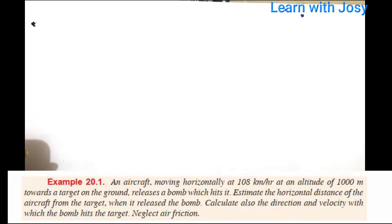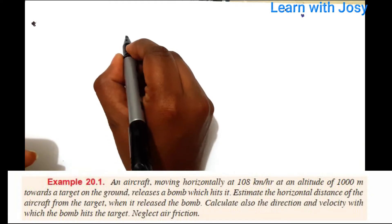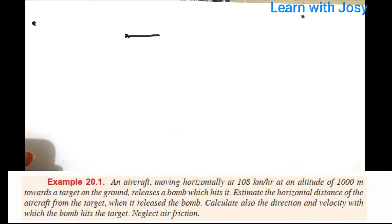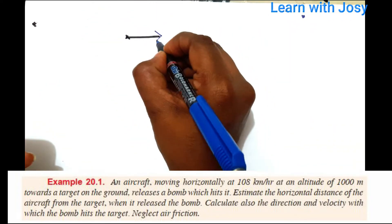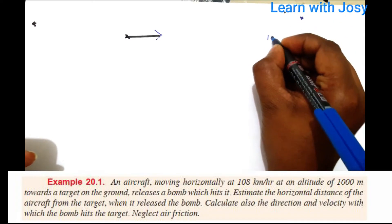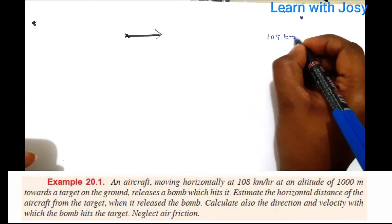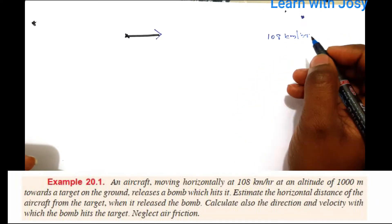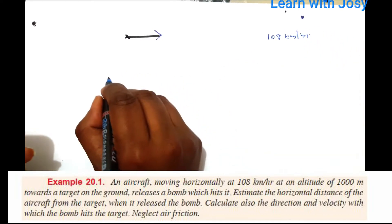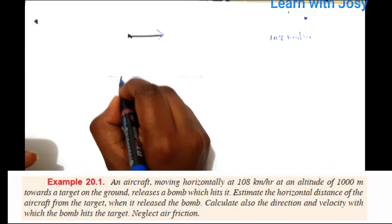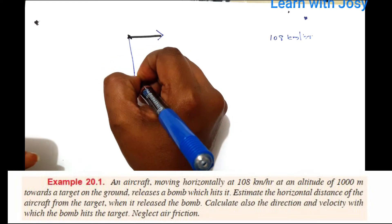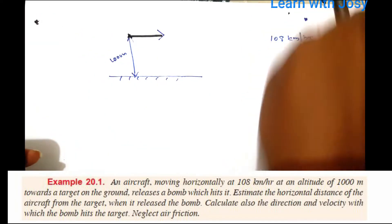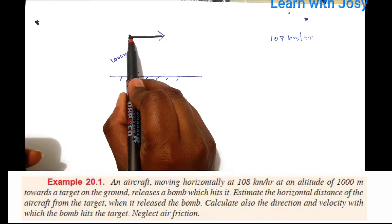Firstly, there is an aircraft that is moving horizontally. Its speed is 108 km per hour, at an altitude of 1000 meters. This aircraft releases a bomb.